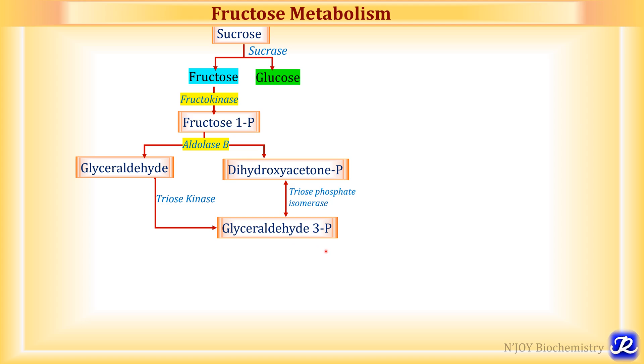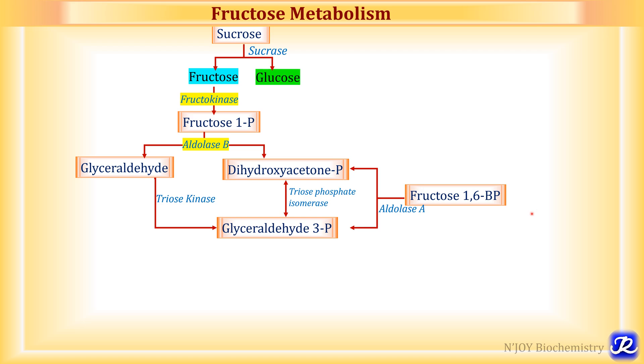By the action of enzyme aldolase A, dihydroxyacetone phosphate and glyceraldehyde 3-phosphate can be converted into fructose 1,6-bisphosphate. The fate of this fructose 1,6-bisphosphate depends on the metabolic state of the body — whether the body is in fasting, starvation, or the well-fed state.